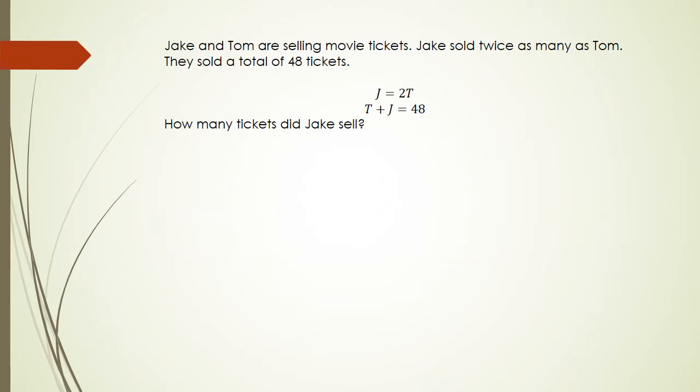So the first question I'm going to be looking at is something like this where it says Jake and Tom are selling movie tickets. Jake sold twice as many as Tom. They sold a total of 48 tickets. So you've been given two sets of equations and it's asking how many tickets did Jake sell.